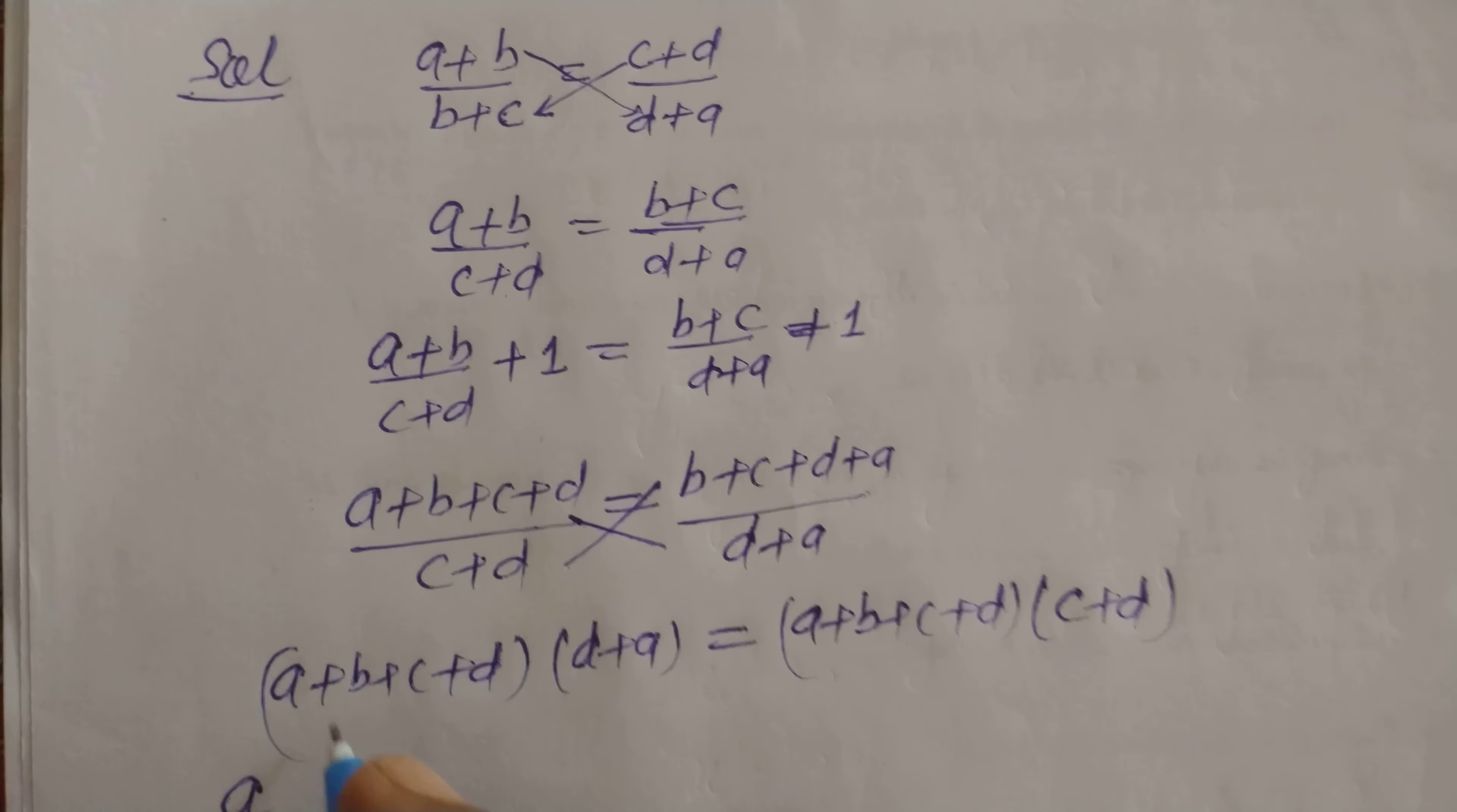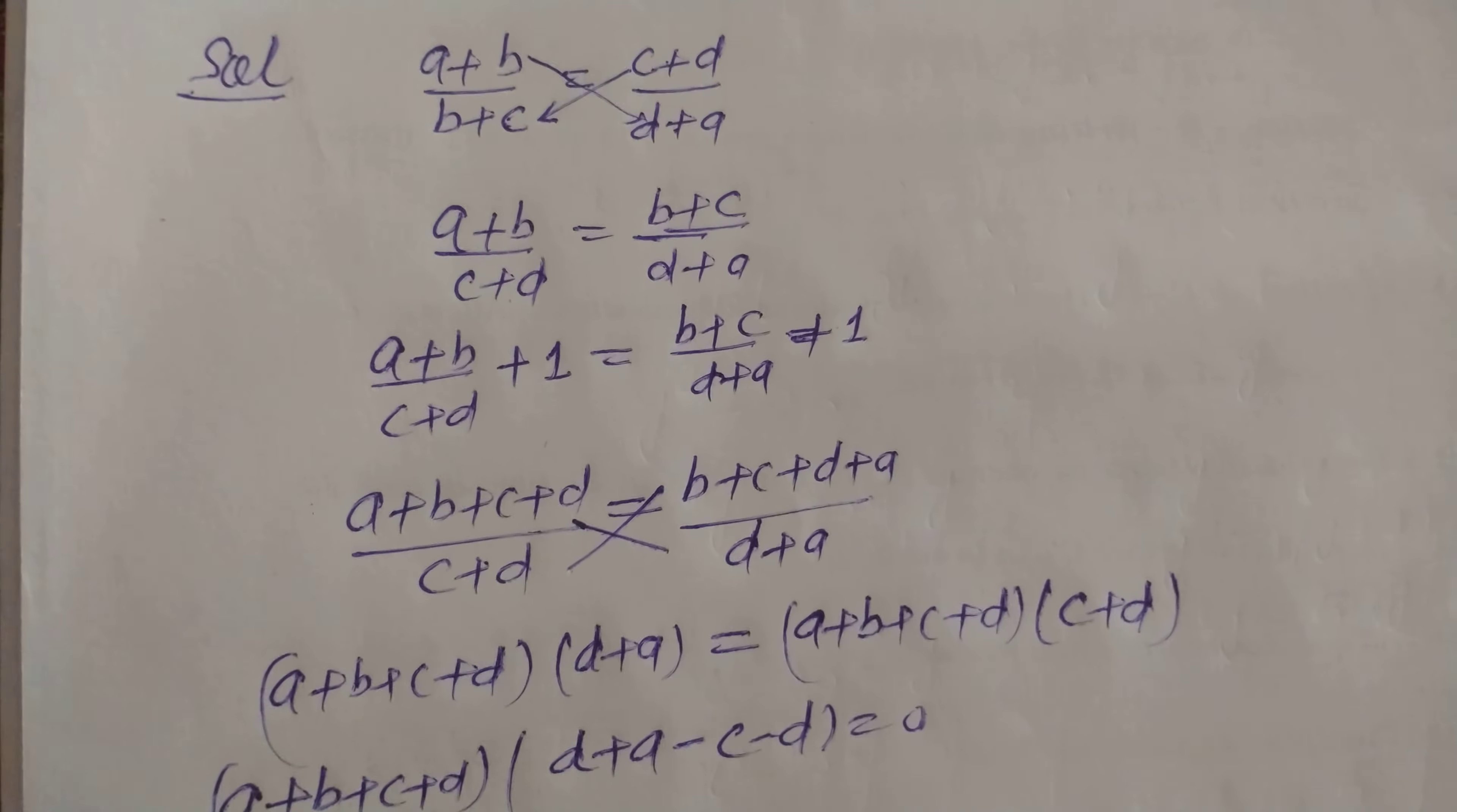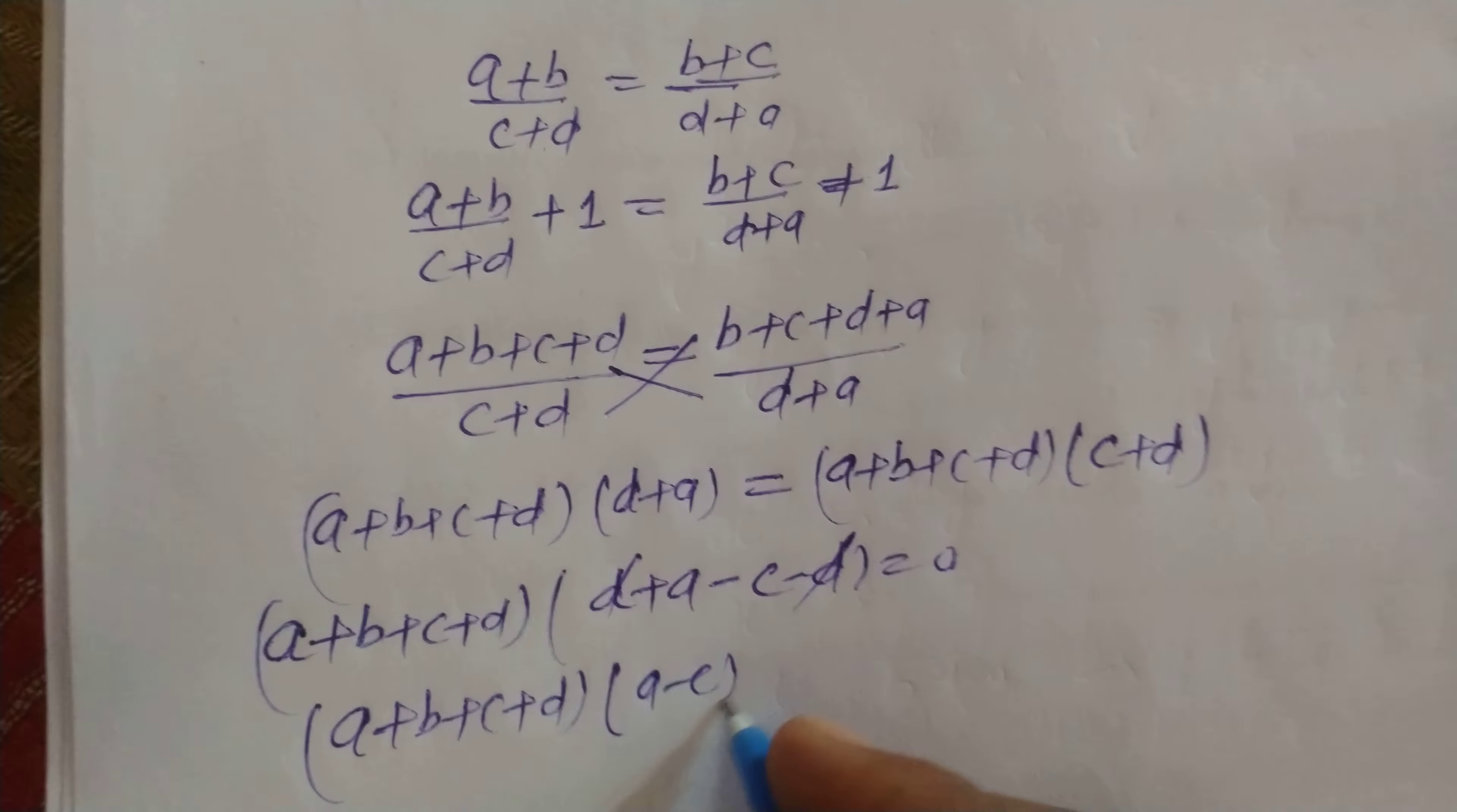Now we take one side and take common (A + B + C + D). So we take this common as (D + A) minus (C + D) equal to 0. Here D cancels, so (A + B + C + D) into (A - C) equal to 0.